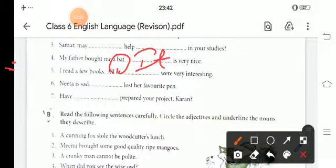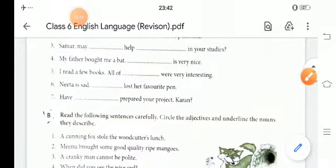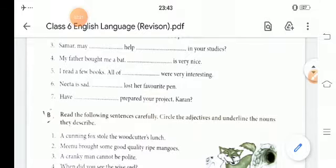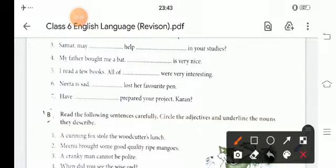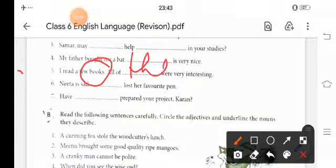Fifth one. I read a few books. Full stop. All of dash were very interesting. So, see here, it has been said books. That means there are not one book. There are lots of books. All of them were very interesting.